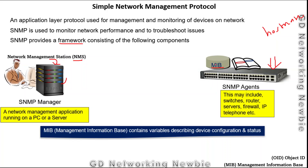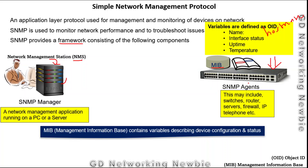All these things are available in the form of variables on the SNMP agents. These variables can represent interface status — whether an interface is working properly or not — uptime, temperature, and other metrics. These variables are defined as OIDs, which stands for Object ID, by which we refer to all these variables.